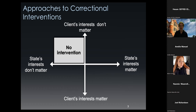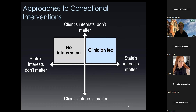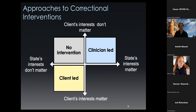The first dimension is the degree to which a client's interests matter, or they don't. The second is the degree to which the state's interests matter, or they don't — meaning how strongly they influence the programs and approach implemented. If the client's interests don't matter and the state isn't interested in rehabilitation, there are no interventions. If the state's interests matter but the client's interests don't, interventions are led by therapists and the state — clients have very little say. If the state takes a back seat but the client's needs, desires, and wishes are taken seriously, it's client-led.